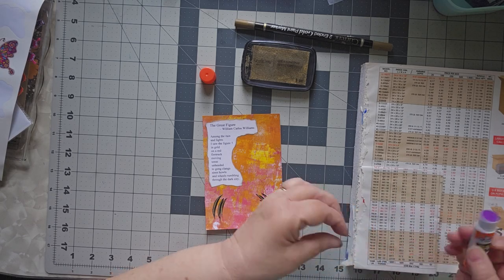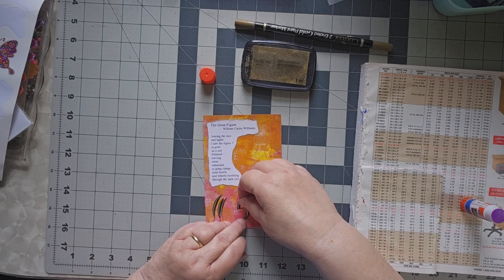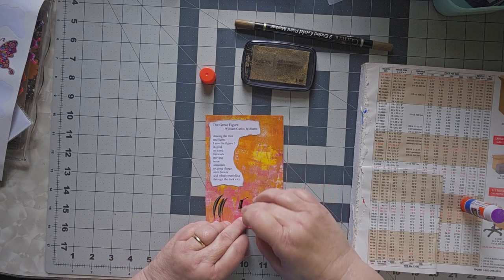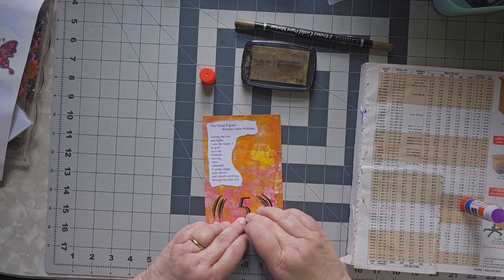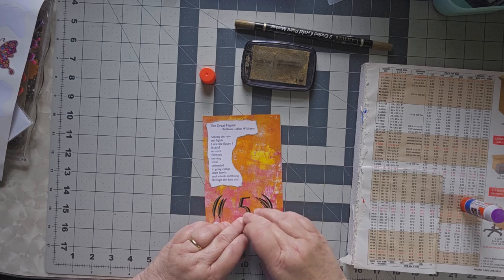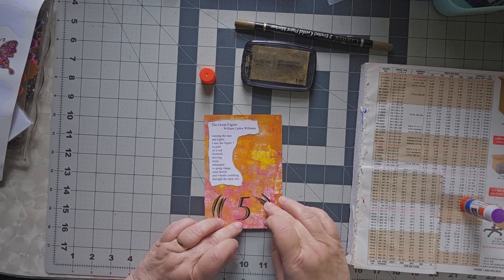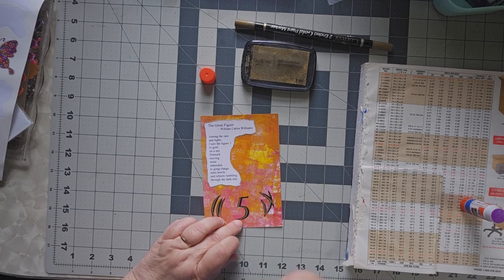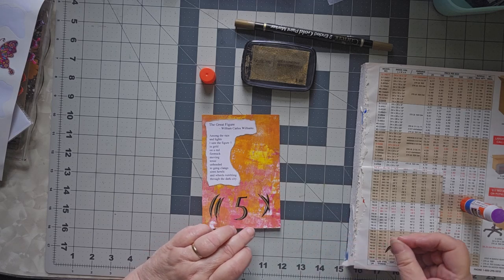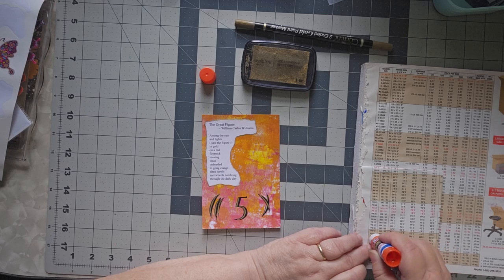And I was looking for something that I could color in with gold. This was what I found, and I really liked it because I thought it has that same feel as the five does in Demuth's painting. It's not exact, but it's a similar feel.